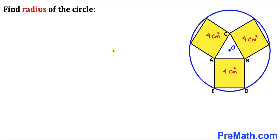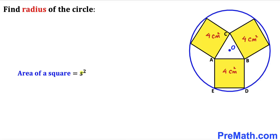Let's get started. We focus on these identical yellow squares whose area is 4 centimeter square. Recalling the area of a square formula: area equals S squared, where S is the side length. Since our area is 4, we write S² = 4, and taking the square root on both sides, our side length S turns out to be 2 centimeters.